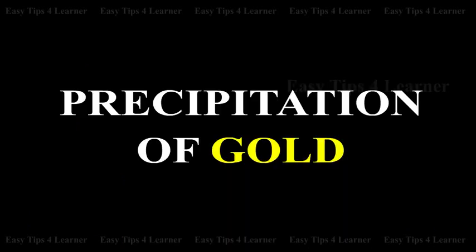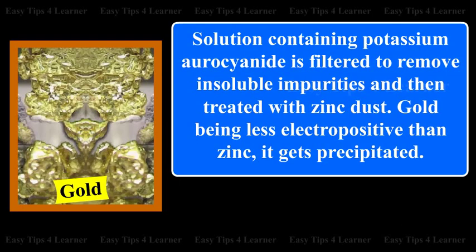Precipitation of gold: the solution containing potassium aurocyanide is filtered to remove insoluble impurities and then treated with zinc dust to precipitate the gold.